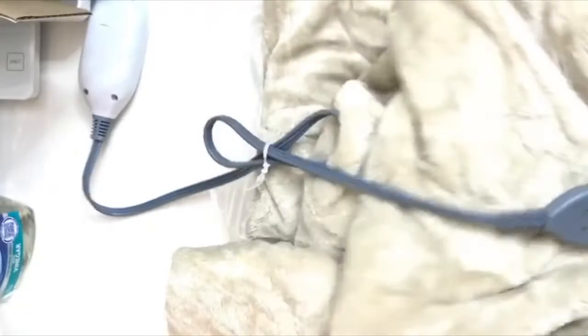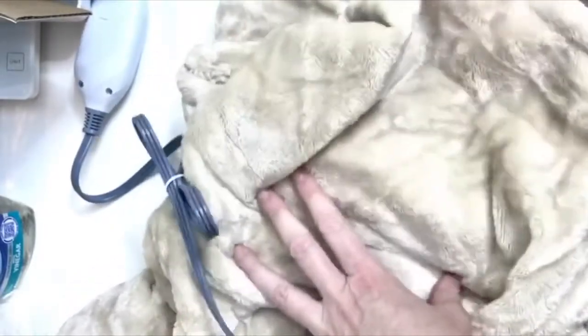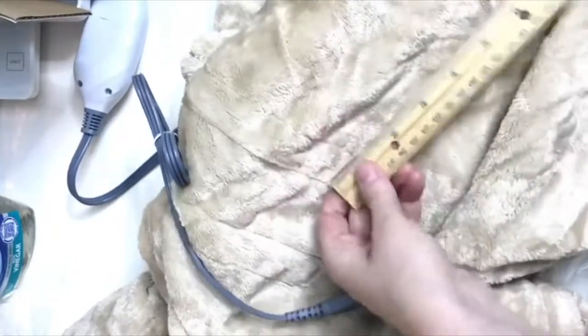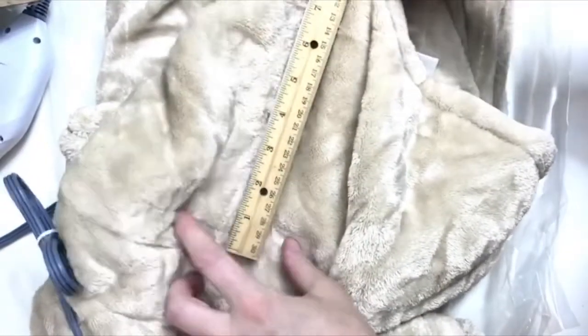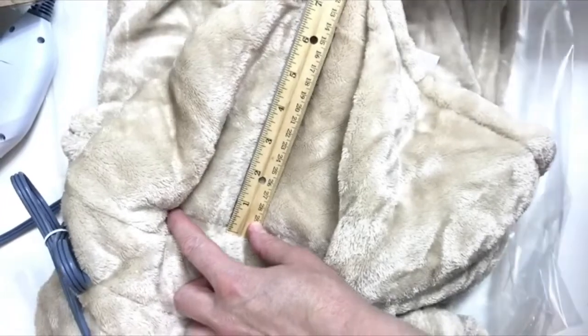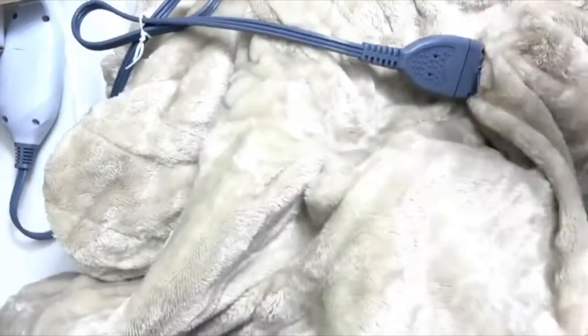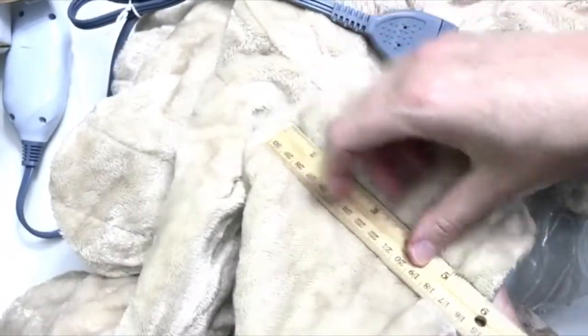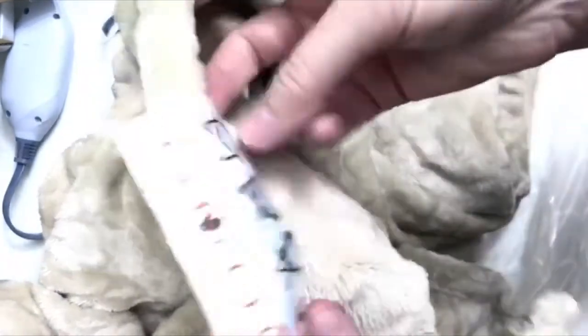One thing I like to know is how close to the sides do the heating elements go. So you can see here this is the side of the throw. The heating element is right here. So it's about nine inches from the side. So that's a little bit of wasted space. I would have liked it to go a little closer to be honest. And then on the bottom here, the heating element is right here and it's about six inches. So six inches from the side and nine inches from what I presume is the bottom because it has the tag.